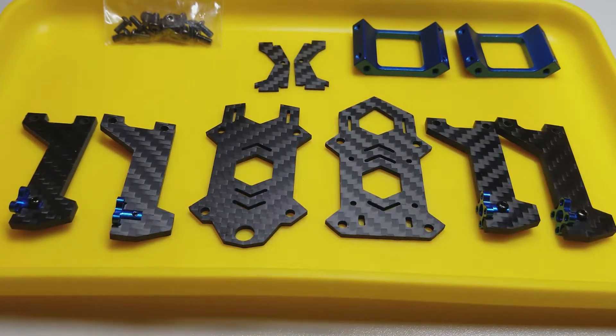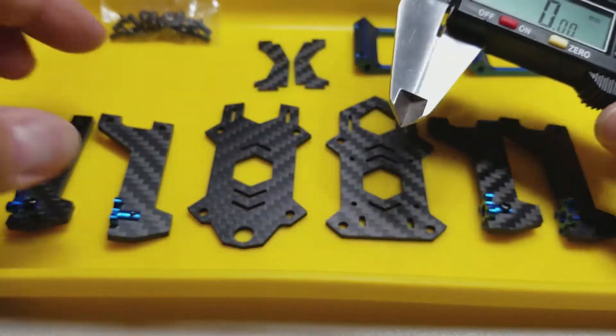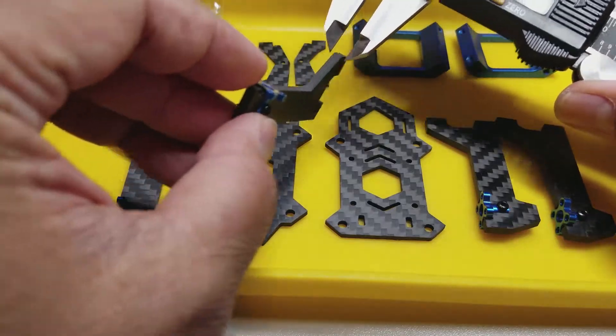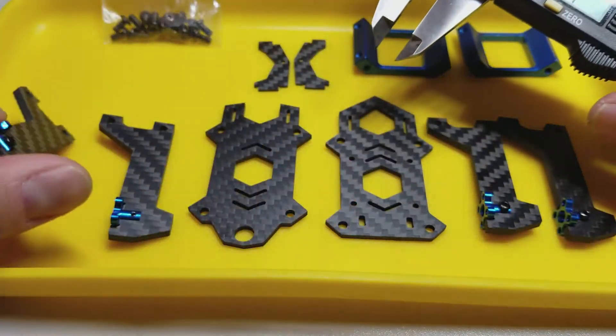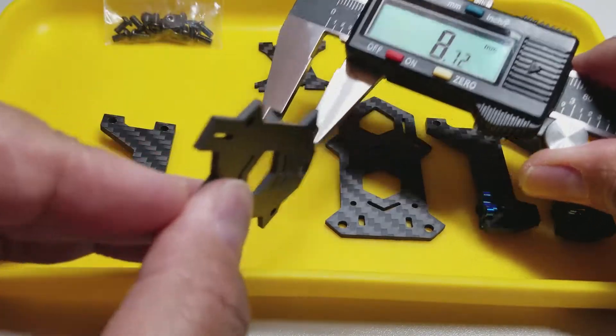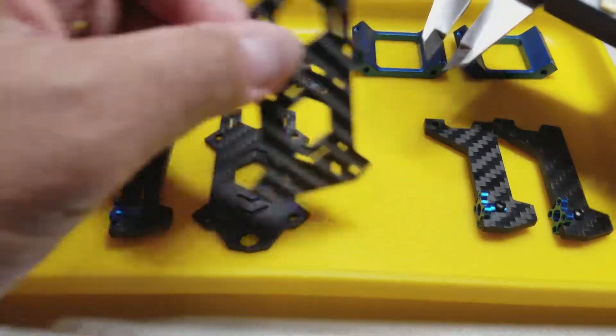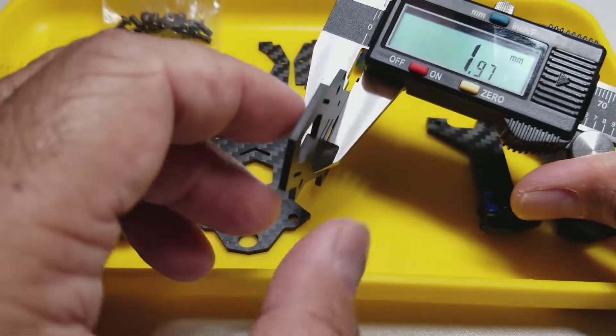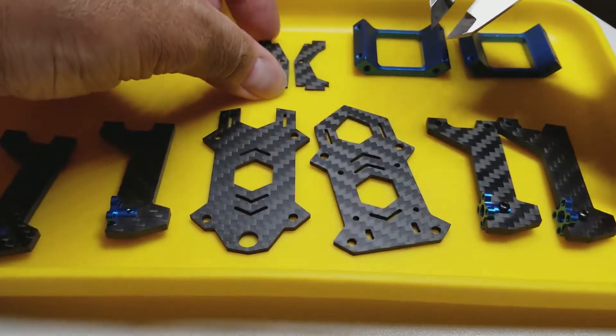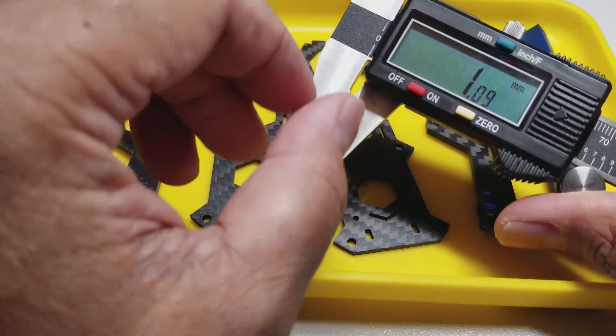So let's measure everything up. My caliper's zeroed out. And let's start with the arms. Arms are 3mm. Top plate 2mm. Bottom plate just under 2. And the camera side plates are just over 1mm.